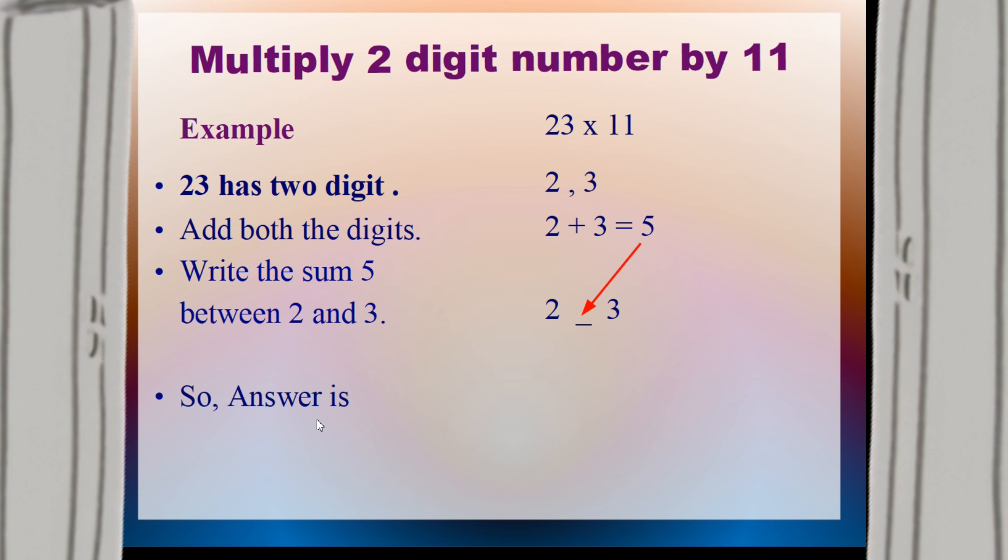Then your answer will be 2, 5, 3. But here the video is not over. And a twist is coming. Now what's that twist? That twist is if the sum of digits is more than 9.